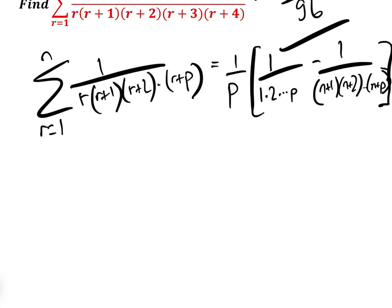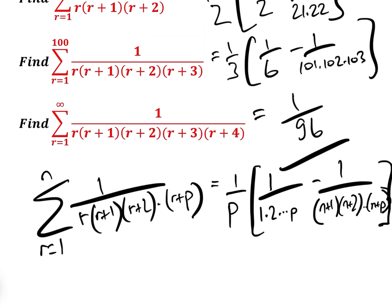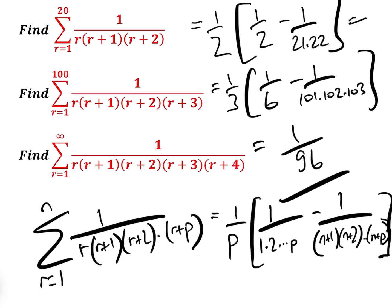That is the formula. Once you know it, going back to the first question, we put p=2, so it's 1/2 times (1 over 1×2, which is 1/2) take away 1 over (n+1)(n+2). With n=20, that's 1 over 21×22. For the second one, p=3, so it's 1/3 times (1 over 1×2×3, which is 1/6) take away 1 over 101×102×103.